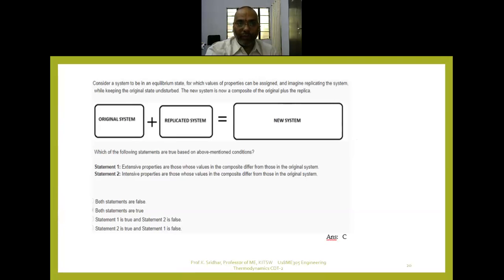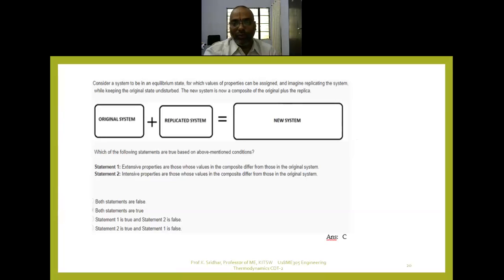A second GATE question asks which statements are true about intensive and extensive properties. Extensive properties are those whose values in a composite system differ from those in the original system. Based on the definitions — extensive properties are dependent on mass, intensive properties are independent of mass — the answer is that statement one is true and statement two is false.